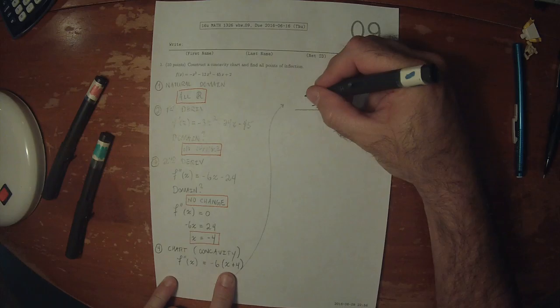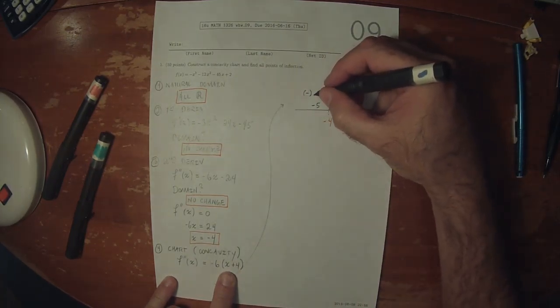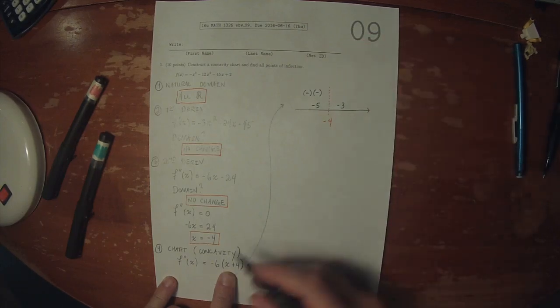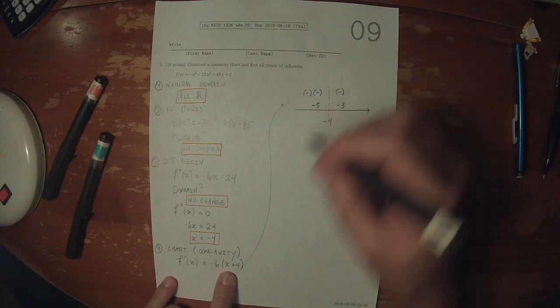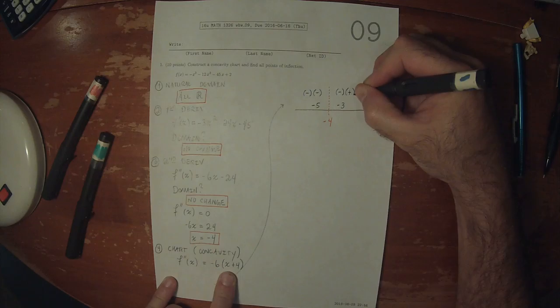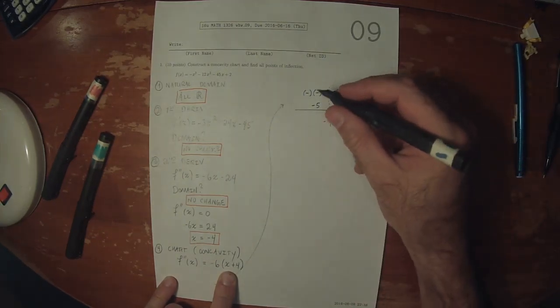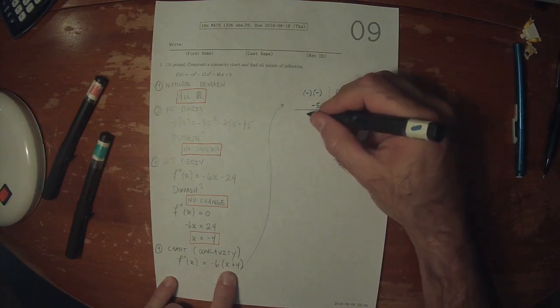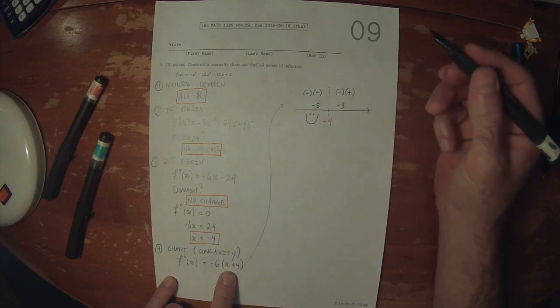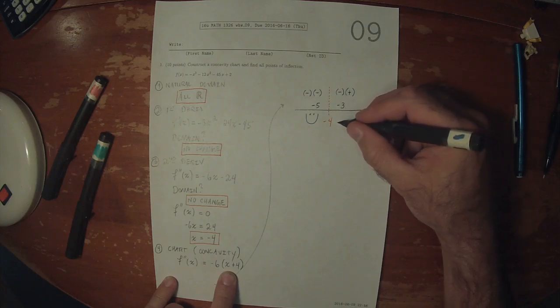Negative 6 is always negative. Plugging in negative 5, that's negative. For the right side, negative 6 is negative, and plugging in negative 3, x plus 4 is positive. Negative times negative is positive, so it's positive concavity on the left. Negative times positive is negative, so negative concavity on the right.